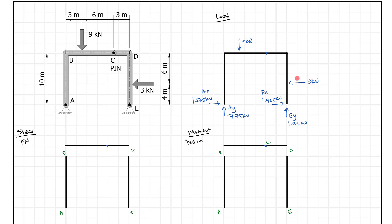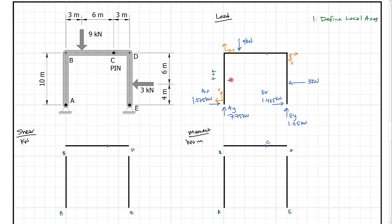Before we do anything else, we need to do a couple of things. First, we want to define our local axes. That tells us which side is the top and which side is the bottom of the beam, and helps us understand tension and compression. I like to look for a way to keep X all going in the same direction — starting down this corner, can we keep going all the way around the structure? The answer is yes. So our local X axis always follows the axis of the member, going around in a circle. The top is always on the outside, the bottom is always on the inside.